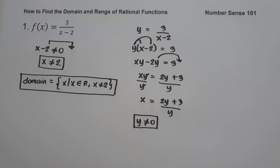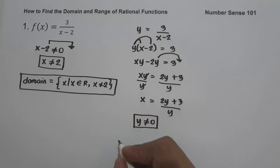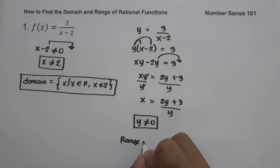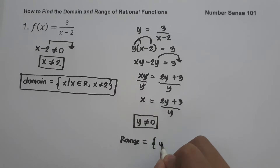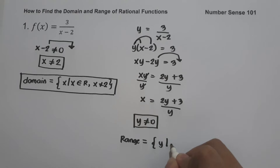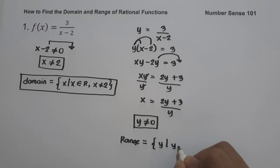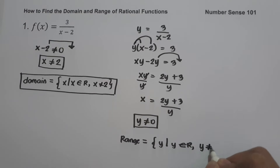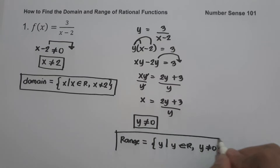So the range of f(x) is the set of all real numbers except 0. In set builder notation: range is the set of values of y such that y is the set of all real numbers except 0. And this will be our answer.